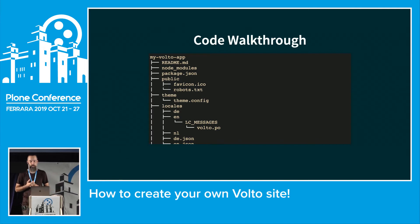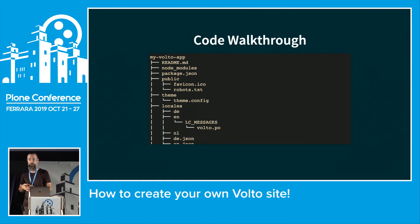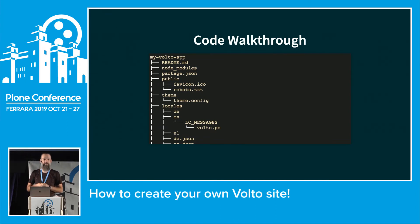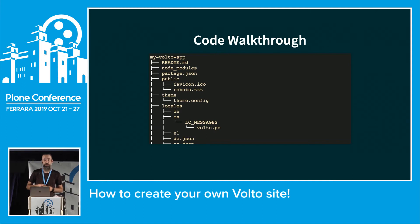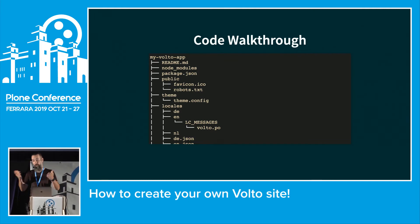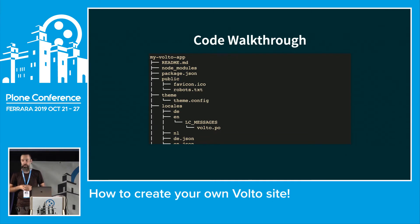Looking at what the package generates: we have a folder called my-volto-app with a readme containing useful information, the node_modules folder containing all packages, and the package.json which has all our dependencies and information about the package — more like your setup.py in the Python world.